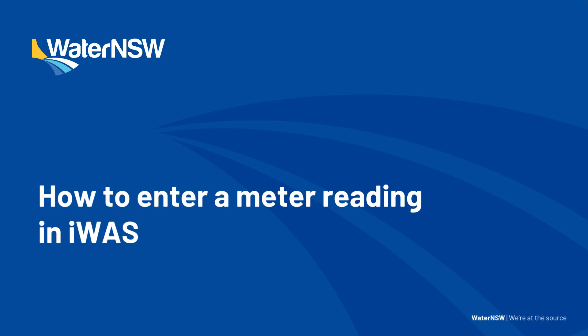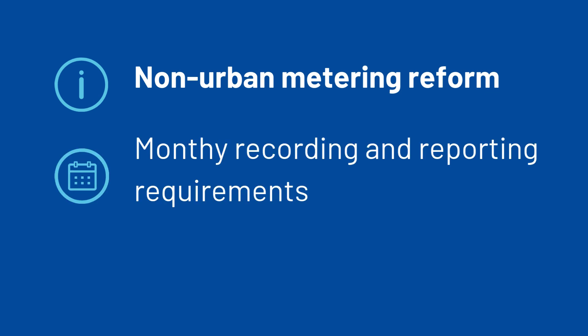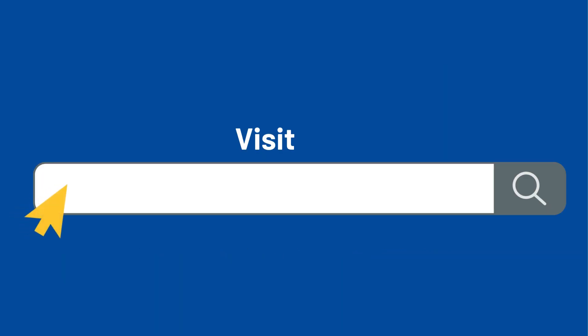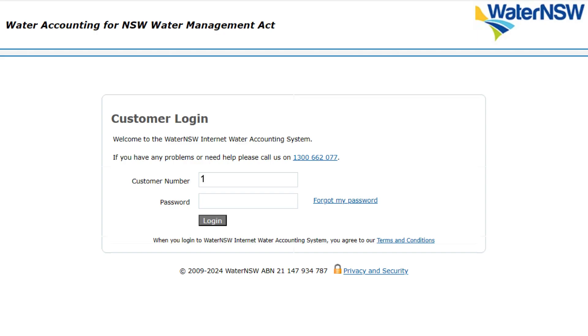This video will demonstrate how to enter a meter reading in our water accounting system IWAS. Under the non-urban metering reform, depending on your circumstance, you may have monthly recording and reporting requirements. To meet these obligations in IWAS, you will first need to visit wardnswales.com.au/IWAS and log in using your customer number and password.